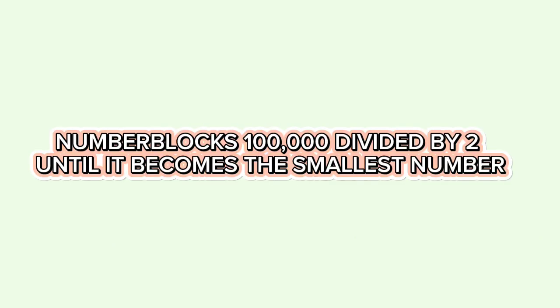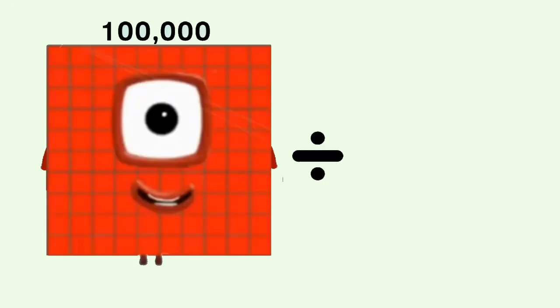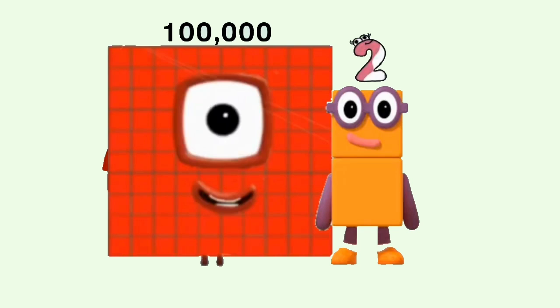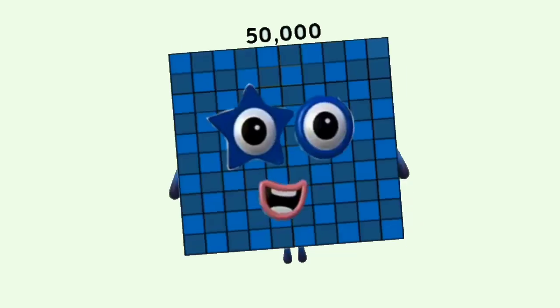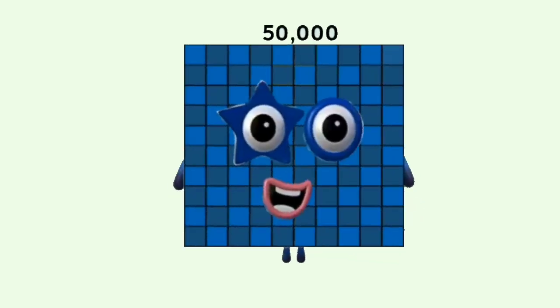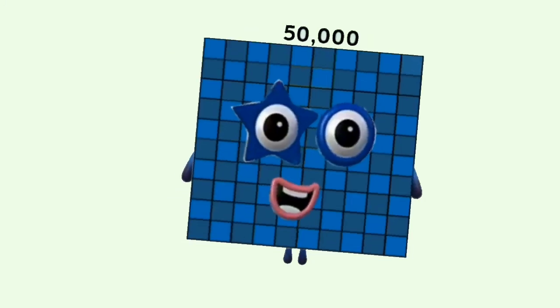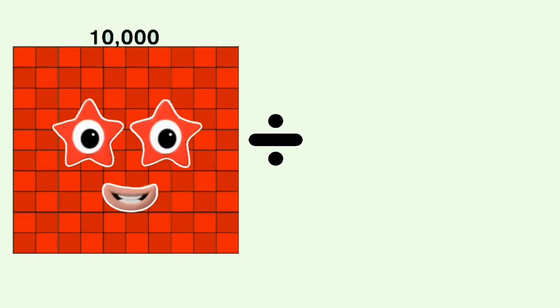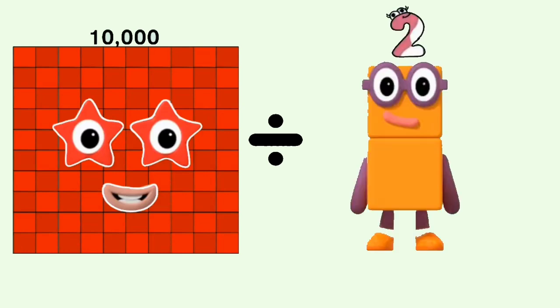Number blocks: 100,000 divided by 2 until it becomes the smallest number. 100,000 divided by 2 equals 50,000. 10,000 divided by 2 equals 5,000.